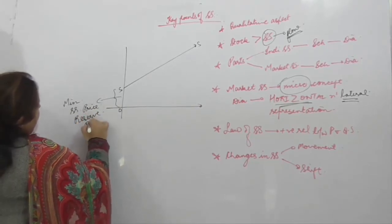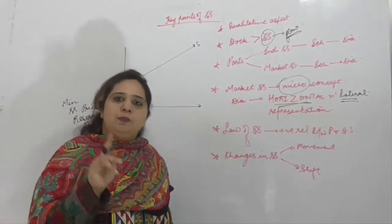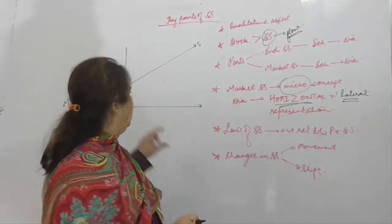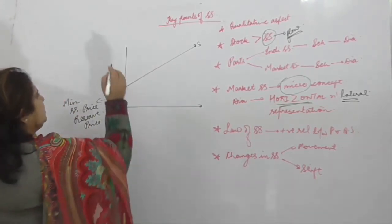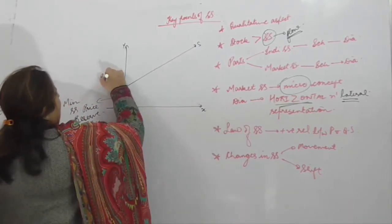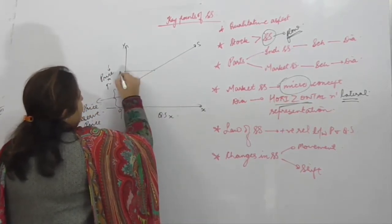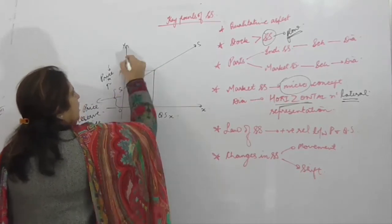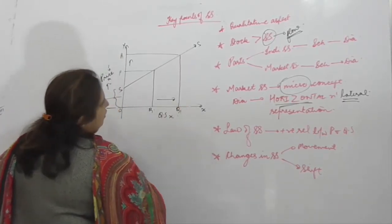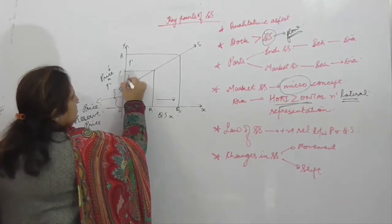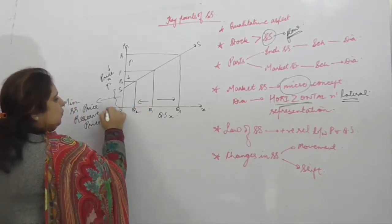Minimum supply price को reserve price भी कहते हैं। इससे नीचे हम अपनी commodity की price कम करके नहीं बेच सकते, क्योंकि producer को अपनी cost of production को भी intact रखना पड़ता है। Price अगर OP है तो quantity supplied OQ; price बढ़कर OP1 हो तो quantity supplied OQ dash; price घटकर OP2 हो तो quantity supplied OQ2 — hence a positive relationship।